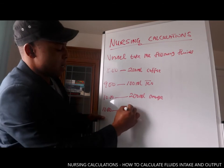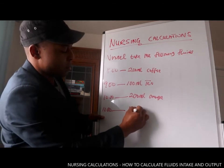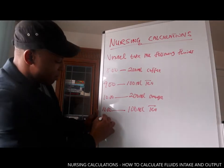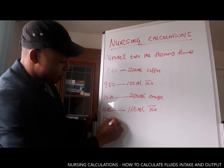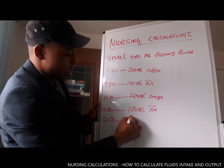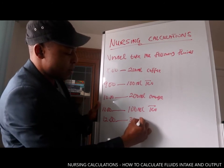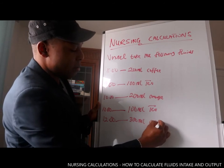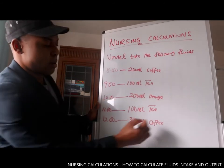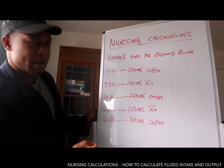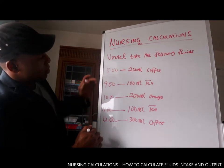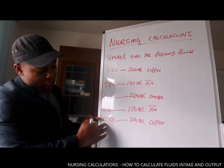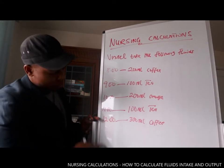Then at 11 o'clock, another 100ml. Then at 12 o'clock, another 300ml of coffee. So we have entries from 8am, 9am, 10am, 11am, 12pm — and this can continue throughout the day up to midnight.